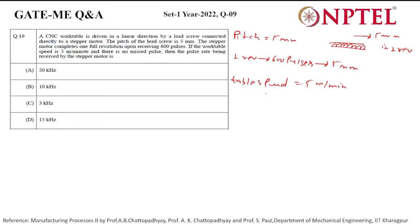We can find the table speed in mm per second. This will be mm per second. We know for 5 mm we require 600 pulses. So for this much mm, how many pulses we require? We can easily get.